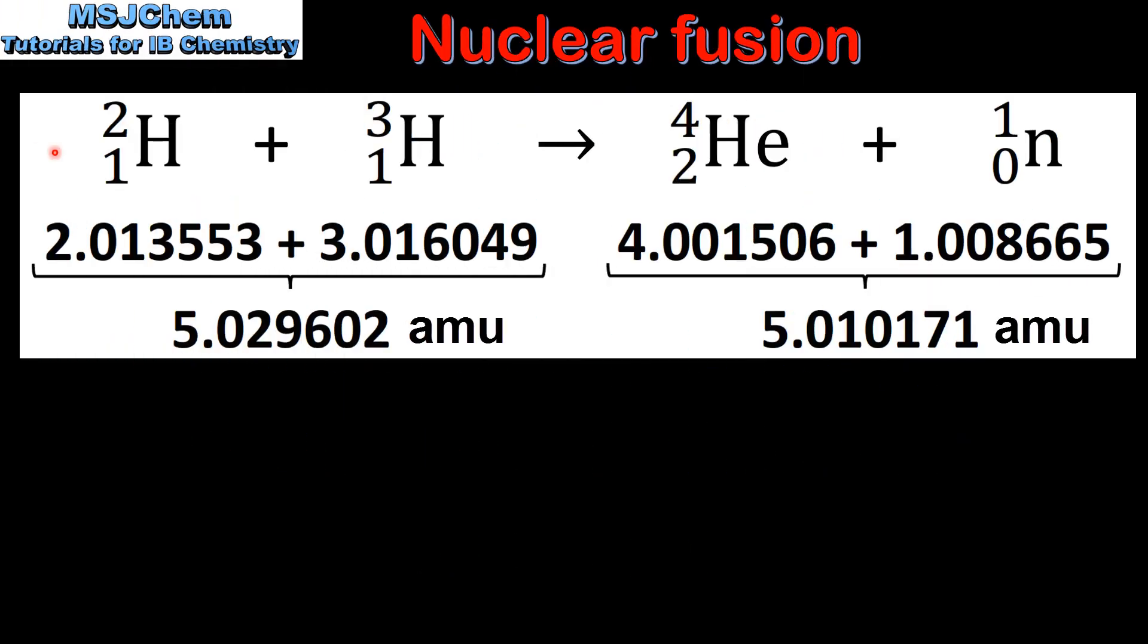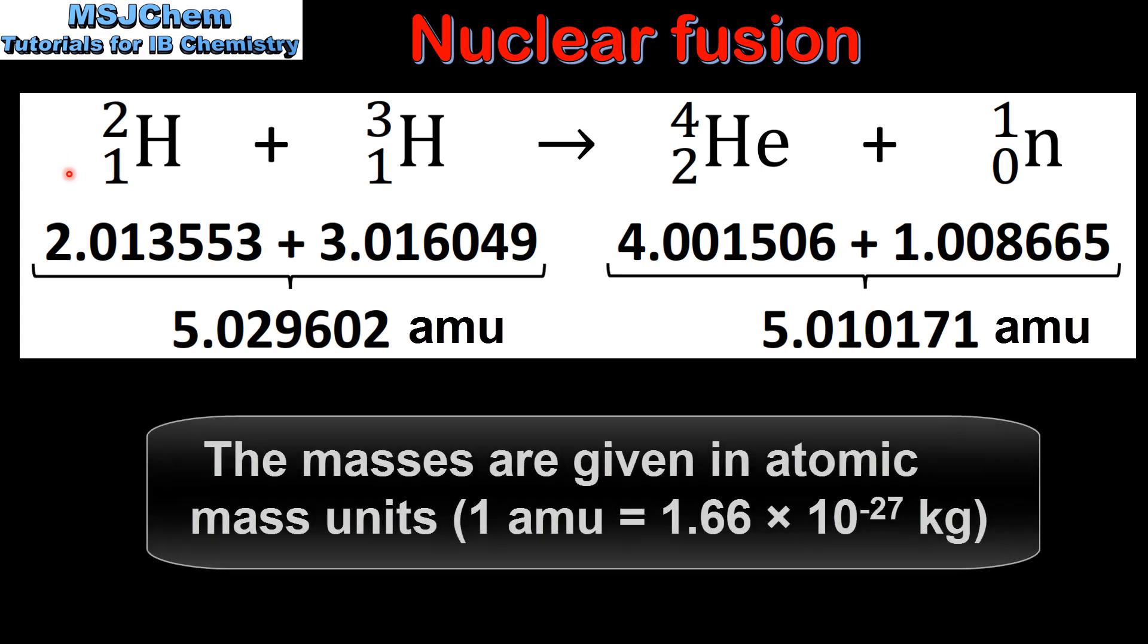We'll start by looking at a nuclear fusion reaction. In this reaction two isotopes of hydrogen, that's deuterium and tritium, react together to form helium and a neutron.